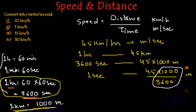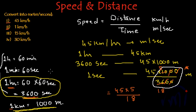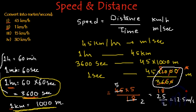Solving it further, the zeros get cancelled and we get 45 multiplied by 5/18. Simplifying: 9 goes into 18 twice and into 45 five times, giving 5 multiplied by 5/2, which is 25/2. This equals 12.5 meters per second. So 45 kilometers per hour converts to 12.5 meters per second.